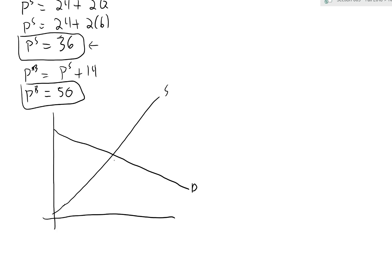Looking at the graph with demand and supply curves, we had the old equilibrium at Q equals 8 and P equals 40. The tax creates a wedge of 14 cents. We're now selling 6 million liters. The bottom of the tax wedge is PS equals 36, and the top of the tax wedge is PB equals 50.